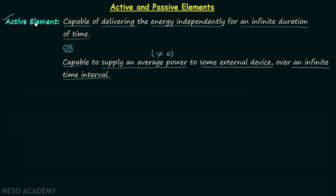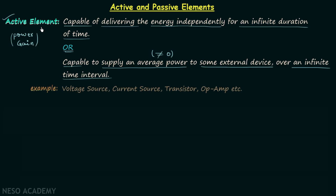Active elements are capable of providing power gain. They can provide power gain to the circuit or to an element in the circuit. Now we will see some examples of active elements.